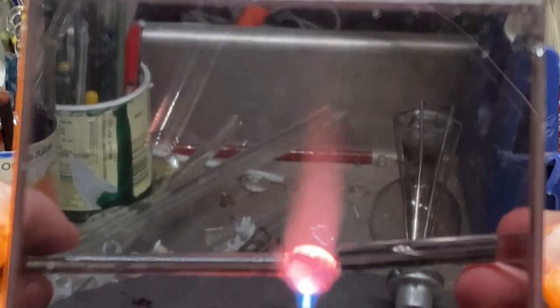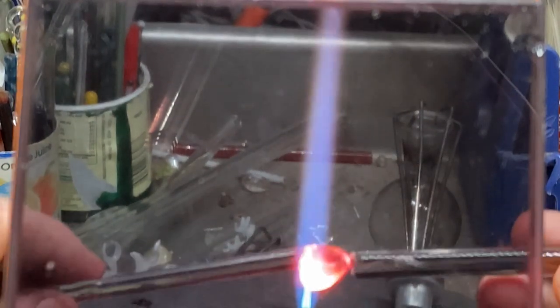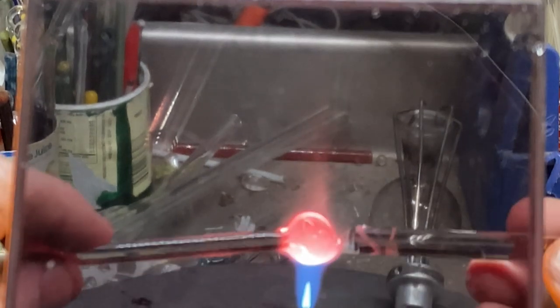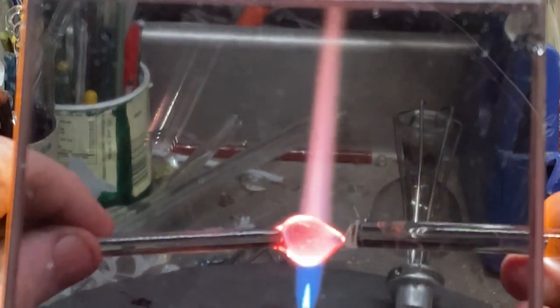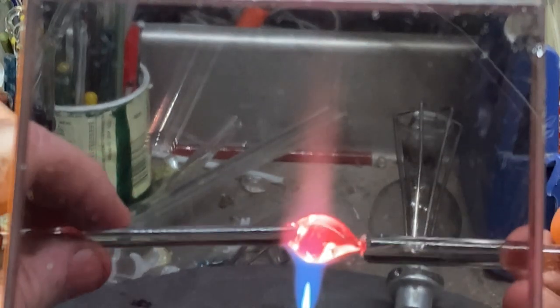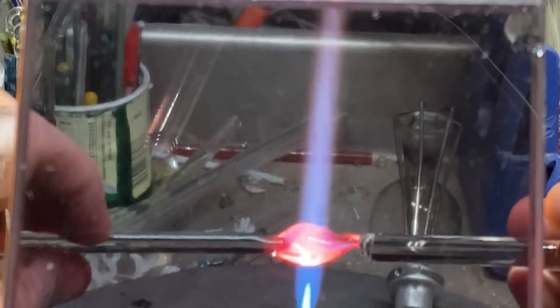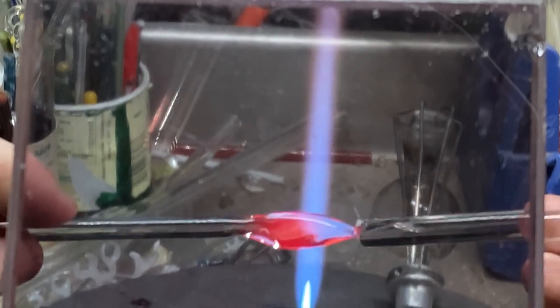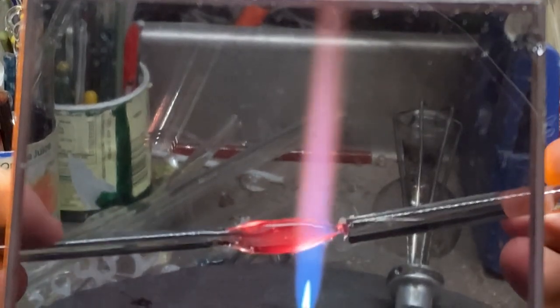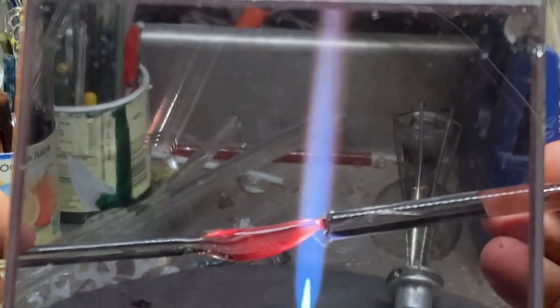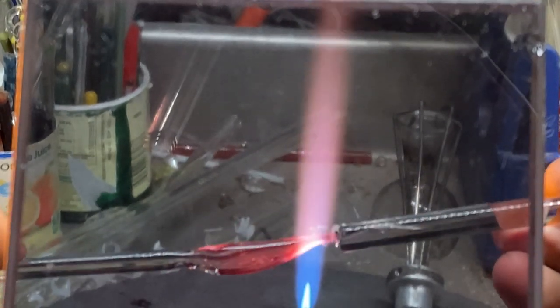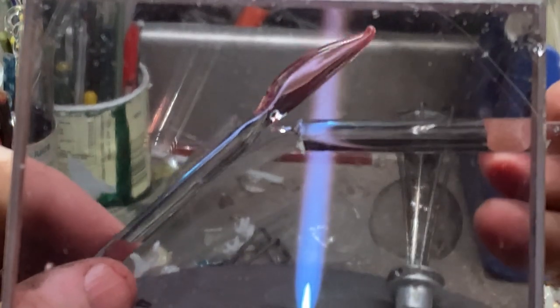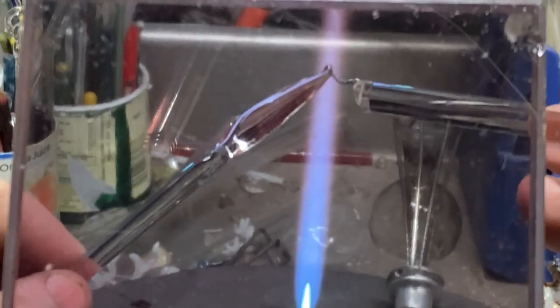First of all you heat up the whole thing evenly, nice and orange. Then you begin to stretch. Stretch and with the stretch you turn around and make the shape of a shark. That's the basic shape of the shark. This side's the head and this side's the tail.